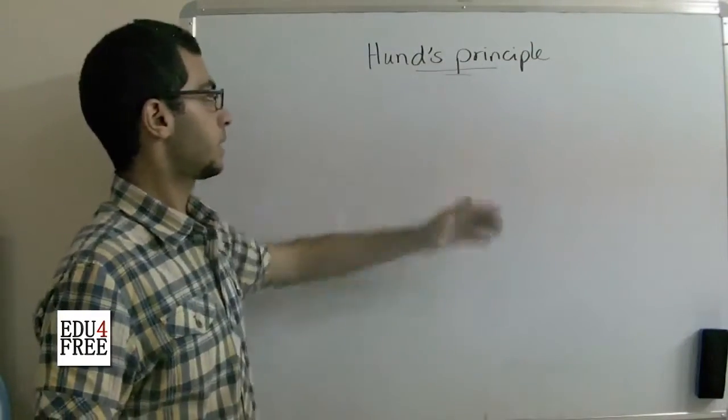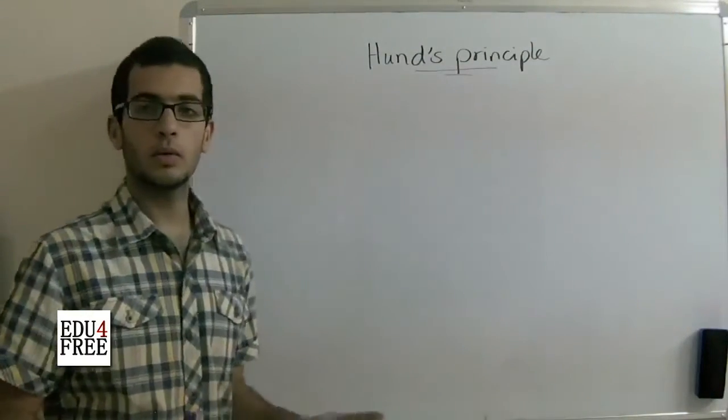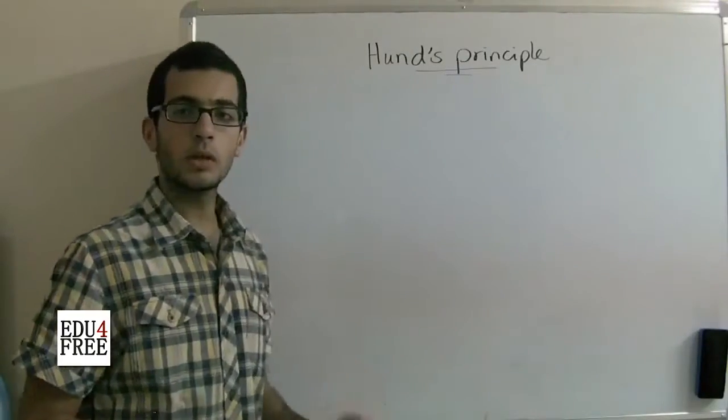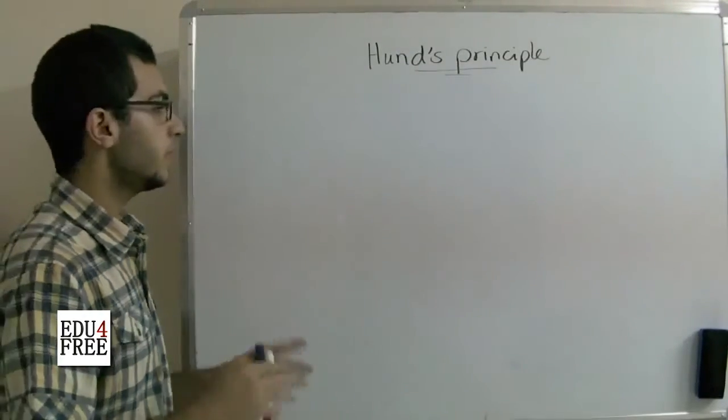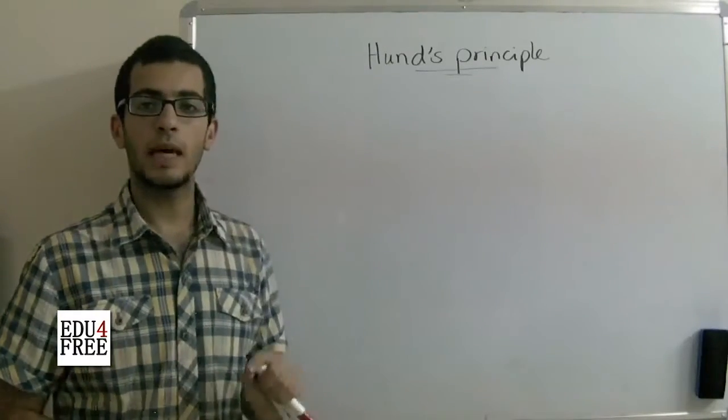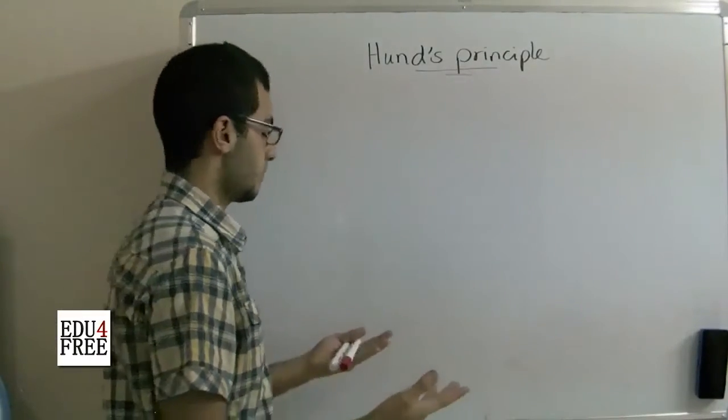Hund's Principle states that no electron pairing takes place in a certain sub-level unless each orbital contains at least one electron. So what does this mean?